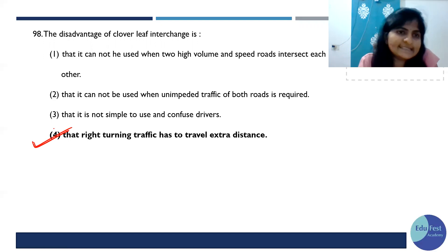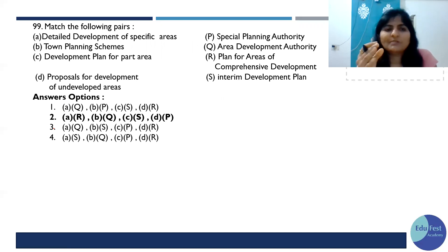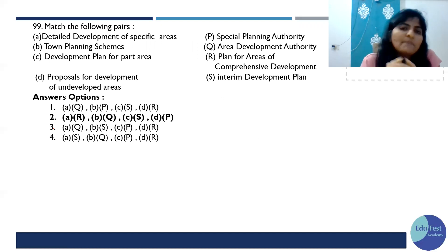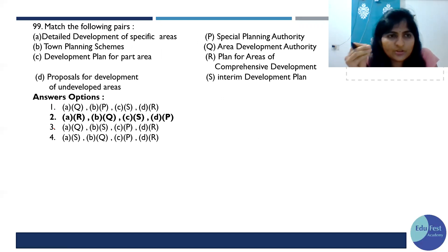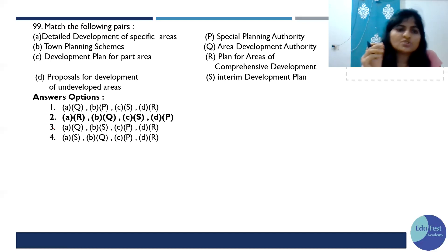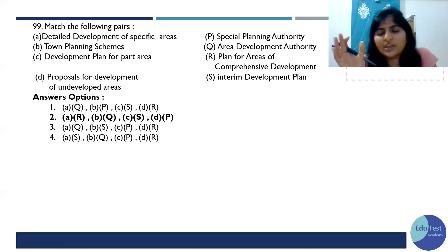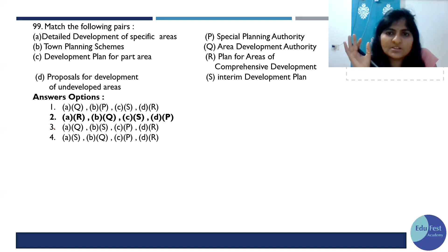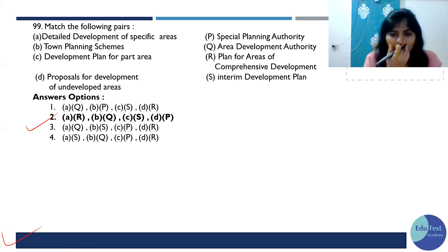Detailed development plan of a specific area: for a comprehensive plan you cover a whole area, and for a part area you do an interim plan. Town planning scheme, area development authority, proposal for foreign development — so when I first read this, 'detailed development of a specific area,' my answer should be comprehensive development plan. In this context, the second option is correct.